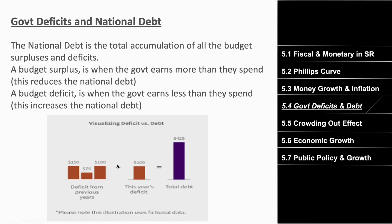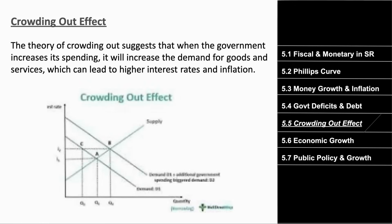The crowding out effect suggests that when the government increases its spending, it increases the demand for goods and services, which leads to higher inflation and interest rates. When the government spends more — as in expansionary fiscal policy — it speeds up the economy because there's more money in circulation. But when there's more money in circulation and higher demand for goods and services, that leads to higher inflation and higher interest rates.